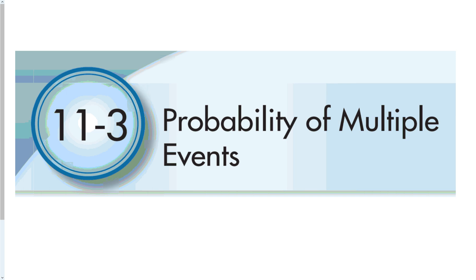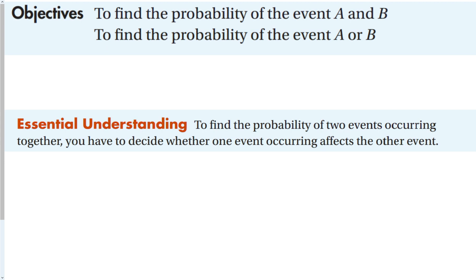Welcome to Online Algebra 2. This is section 11-3, Probability of Multiple Events. Our objectives here are to find the probability of event A and event B — two events occurring — and then to find the probability of event A or event B, one or the other.